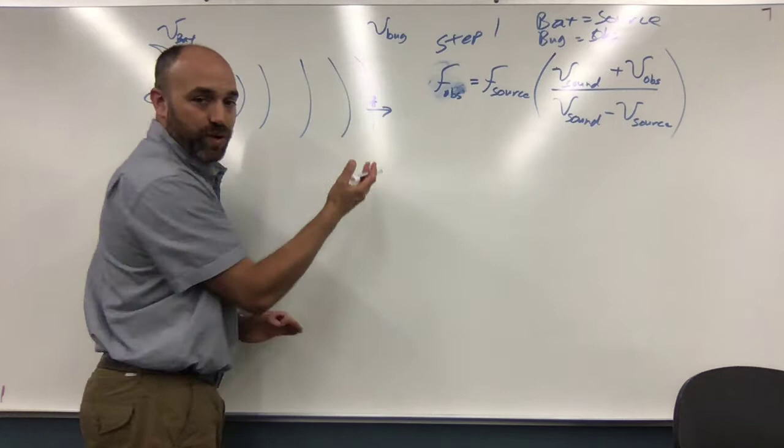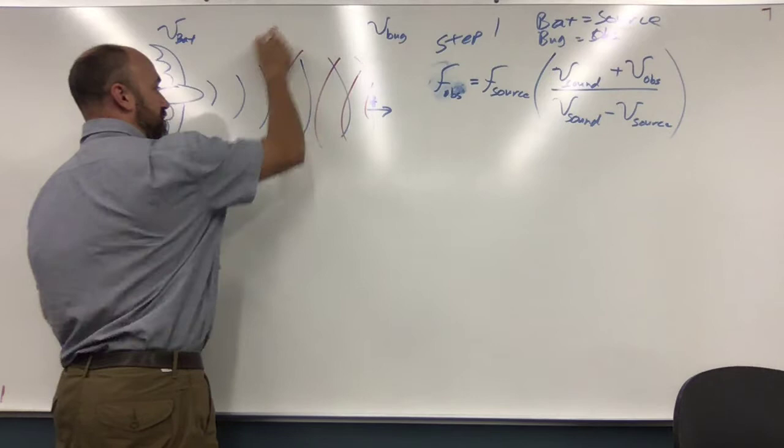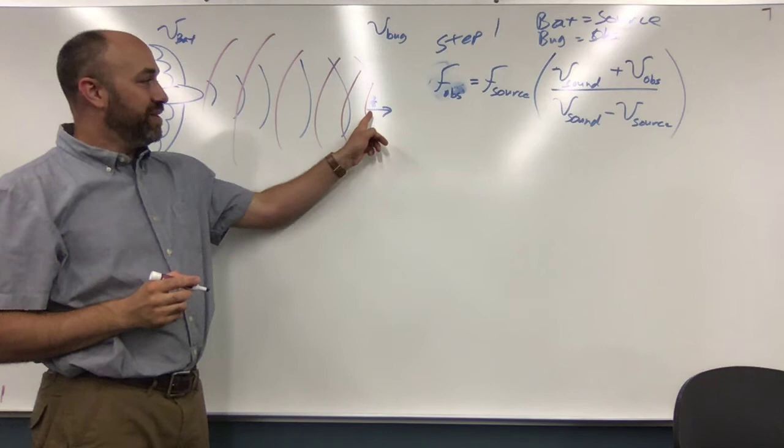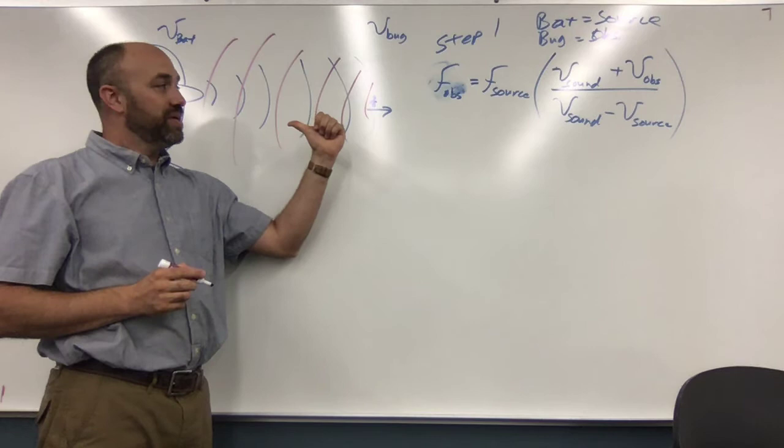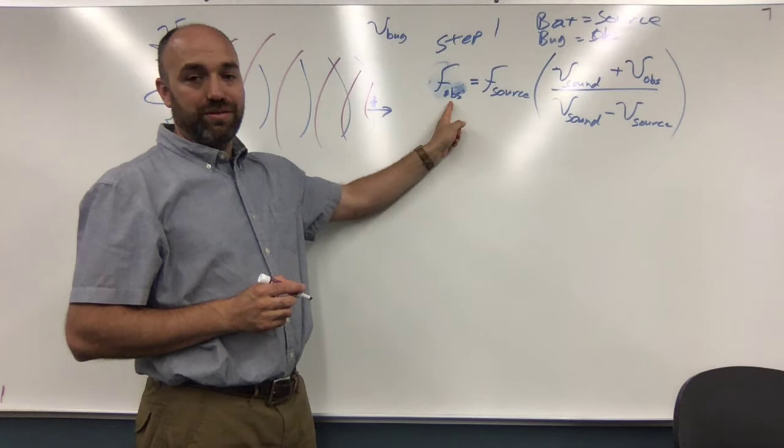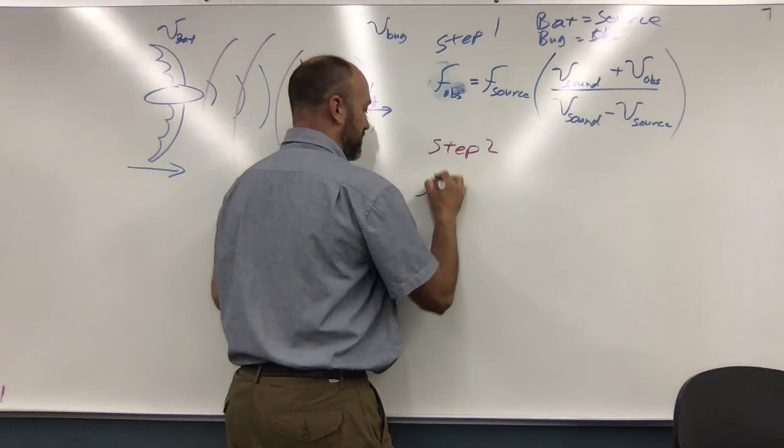Now step two. I'll use a different color for this. The sound wave bounces off the bug and comes back to the bat. And the frequency that bounces off the bug is equal to what was observed by the bug. So now step two.